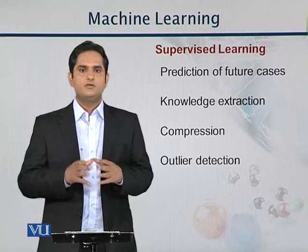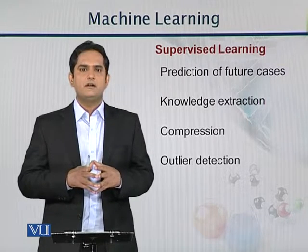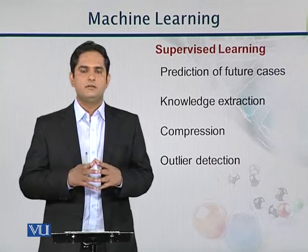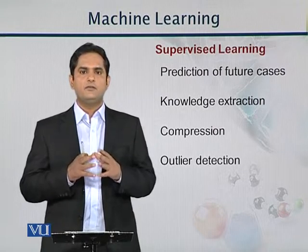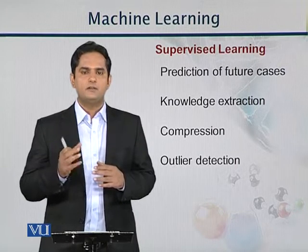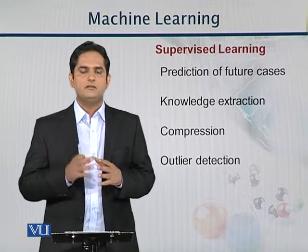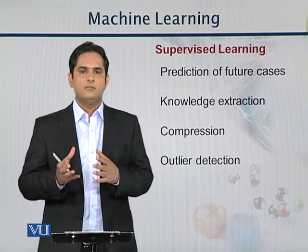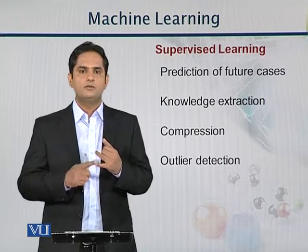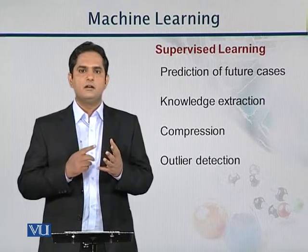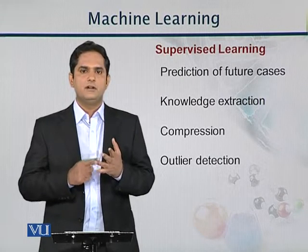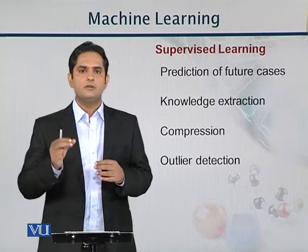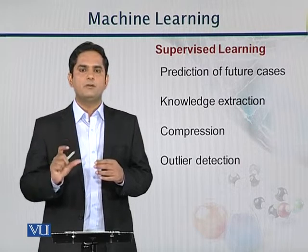Supervised learning means that our training data has labels with itself. For example, if we want to identify a face of a person, we will look at specific parts of the face such as pose, lighting, head, nose, lips, mouth, and everything — they will have names or labels of that particular person.